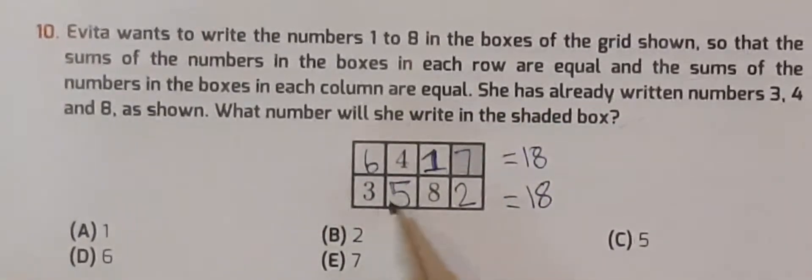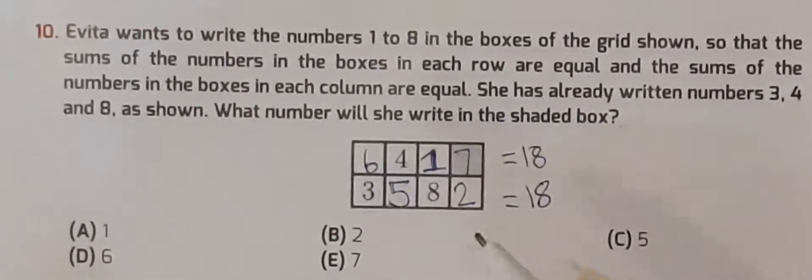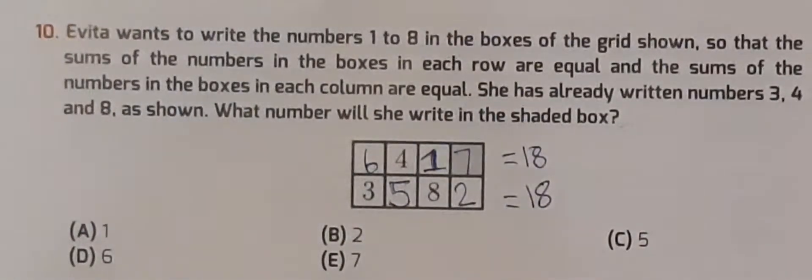If we wrote 7 here and 2 above, then 18 will not come because 5 plus 3 is 8, plus 2 is 10, and if we plus 7 in it, it will be any other number will come.